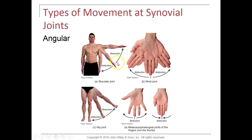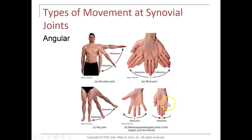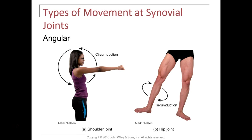Other angular movements are abduction and adduction. Abduction is when a body part moves away from midline. Adduction is the exact opposite — when the body part moves back towards the midline. So your arm coming up is abduction and coming back to your side is adduction. Moving your leg out is abduction; moving it back in is adduction. Spreading your fingers apart is abduction; closing them back is adduction.